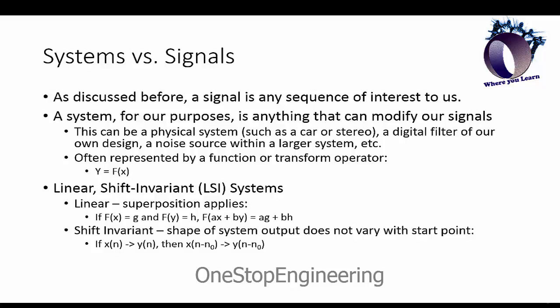By linear we mean that superposition applies, that a linear system is both associative and commutative. Shift invariant simply means that the shape of the system output does not vary with the start point of the input.